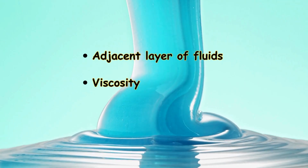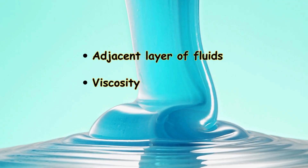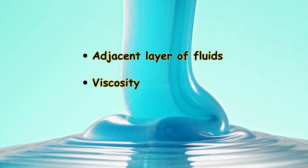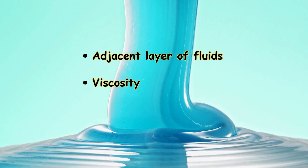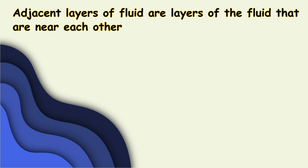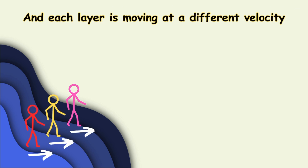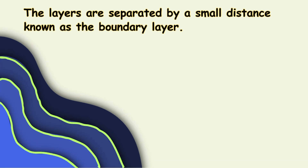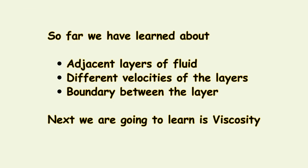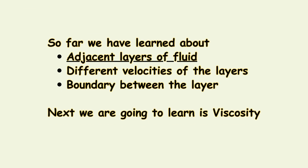The property of viscosity mainly depends upon two factors: adjacent layers of fluids and viscosity. Adjacent layers of fluid are the layers of the fluid that are near to each other, and each layer is moving at a different velocity. The layers are separated by a small distance known as the boundary layer. So far we have learned about adjacent layers of fluid, different velocities of the layers, and the boundary between the layers.